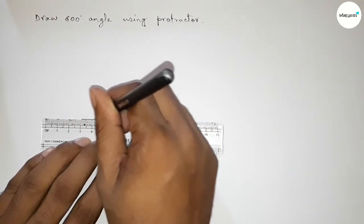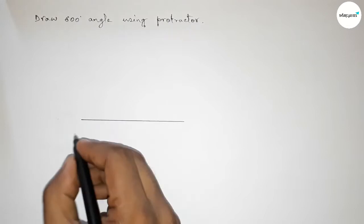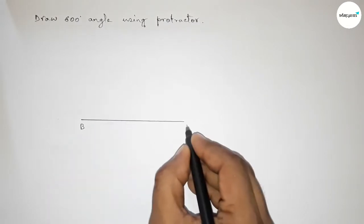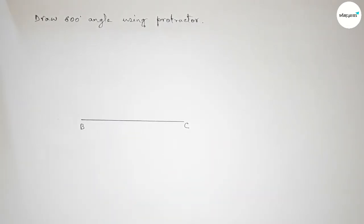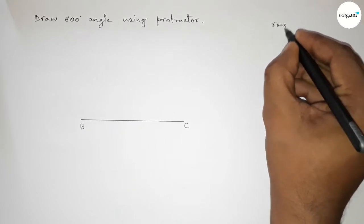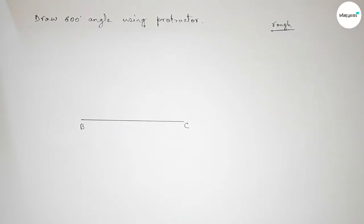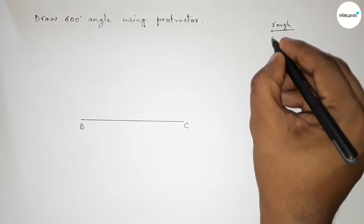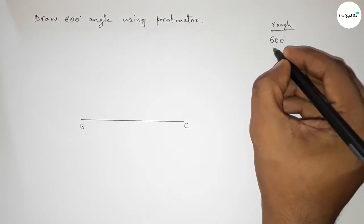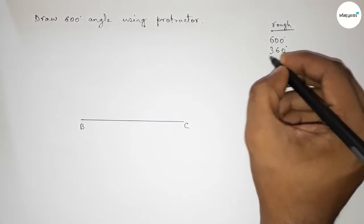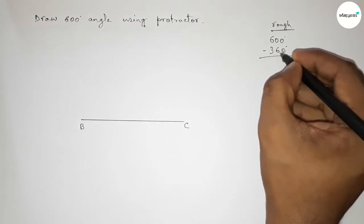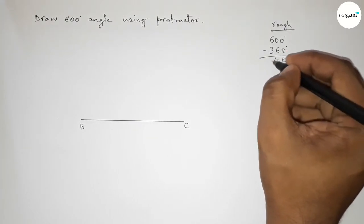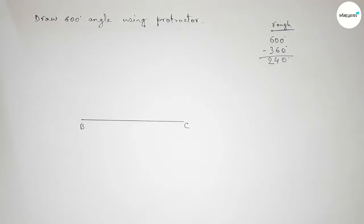Taking point B here and point C here. Now let's discuss some important calculations. First, if we subtract 360 degrees from 600 degrees, we get 240 degrees.